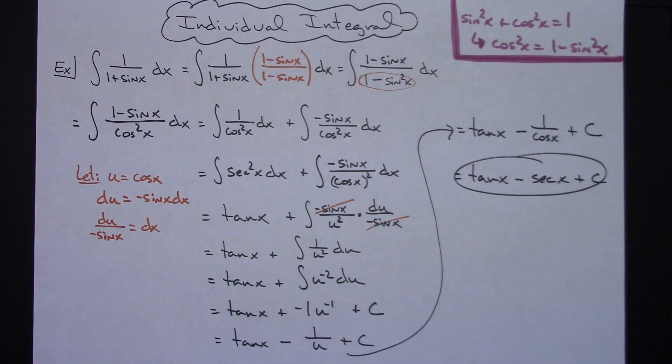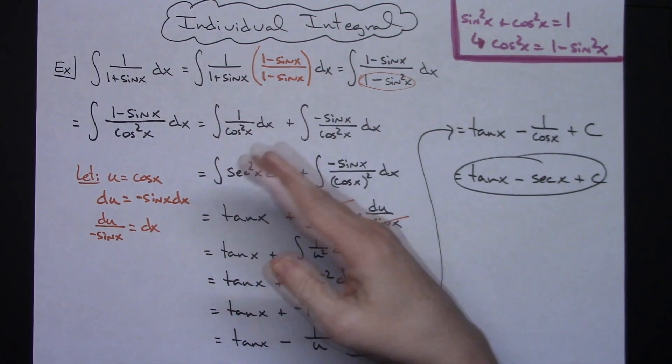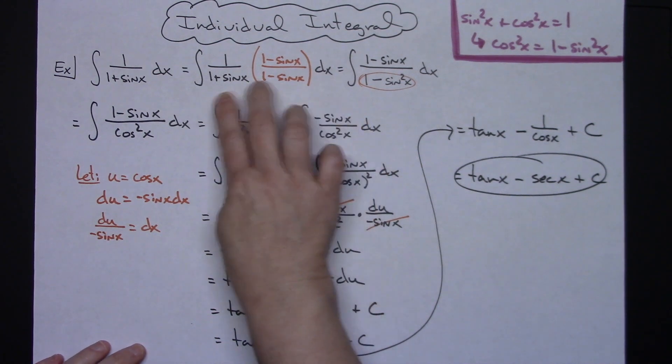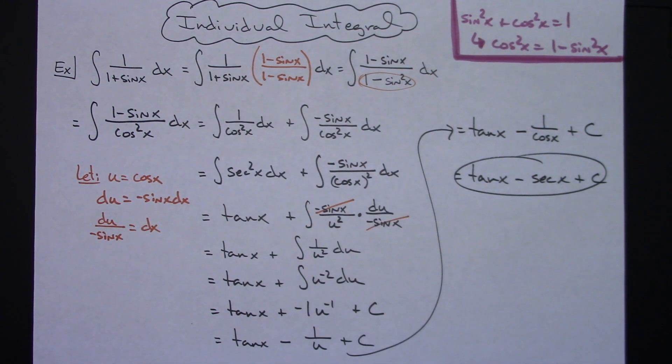All right so definitely a pretty straightforward integral after you get started recognizing that denominator and knowing that you got to multiply by that conjugate to form that identity then so that you can do a nice little substitution. Definitely thanks for watching. If the videos are helping please share with your friends so that they can benefit too and don't forget to subscribe to the channel thanks.